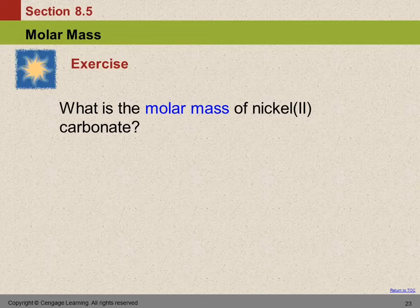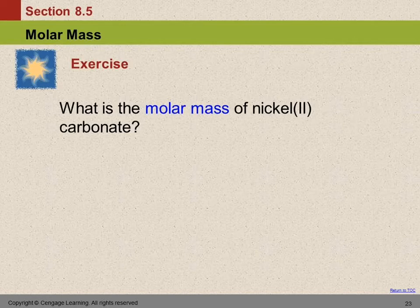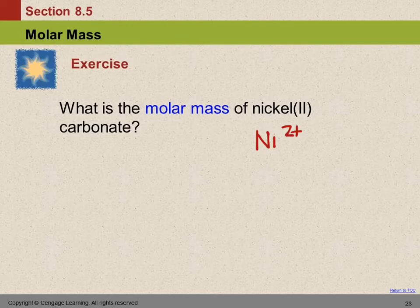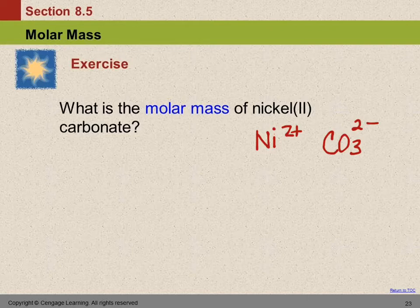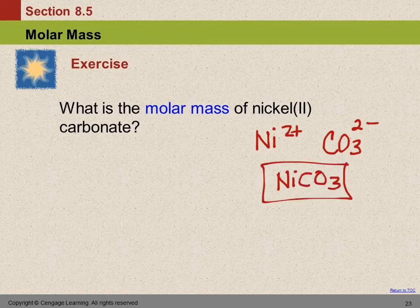Here's an exercise: what's the molar mass of nickel-2 carbonate? First we need the formula. Nickel-2 is Ni²⁺ — the Roman numeral 2 tells us the charge. Carbonate is CO₃²⁻, which you'd look up in a table. Since we have +2 and −2, we just need one of each, so the formula is NiCO₃.